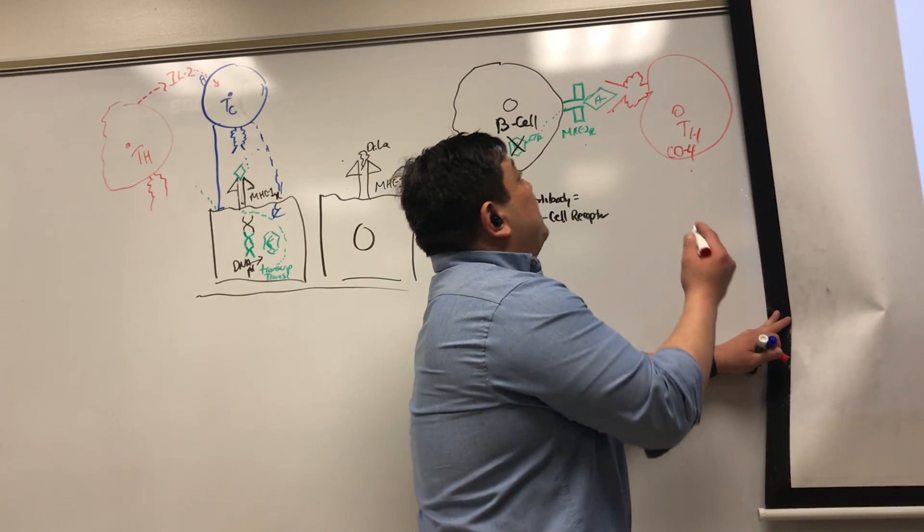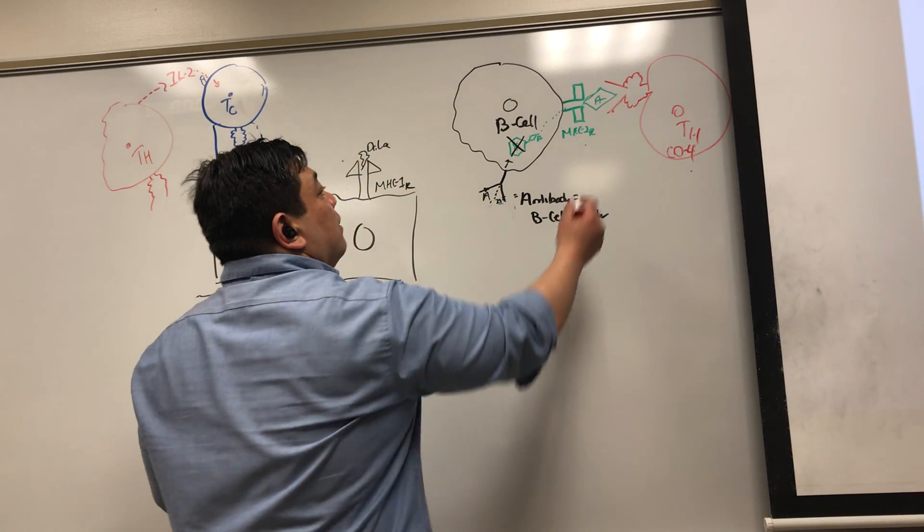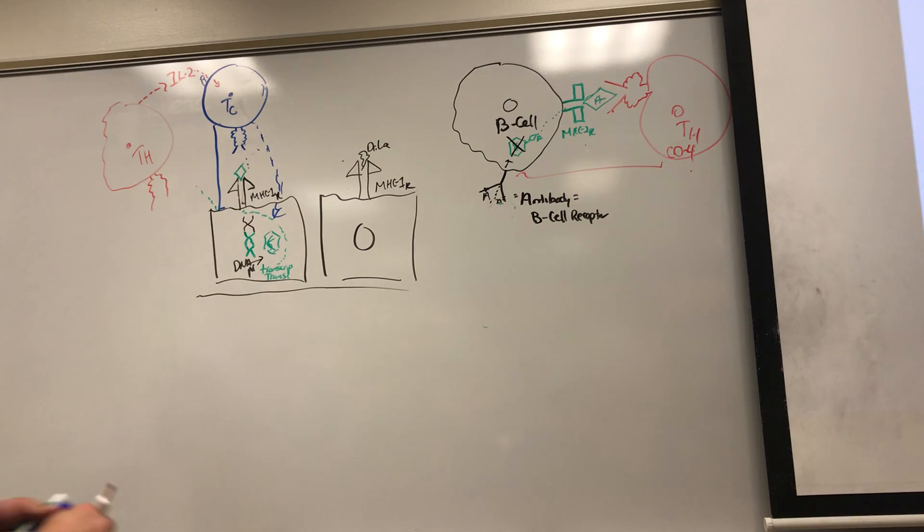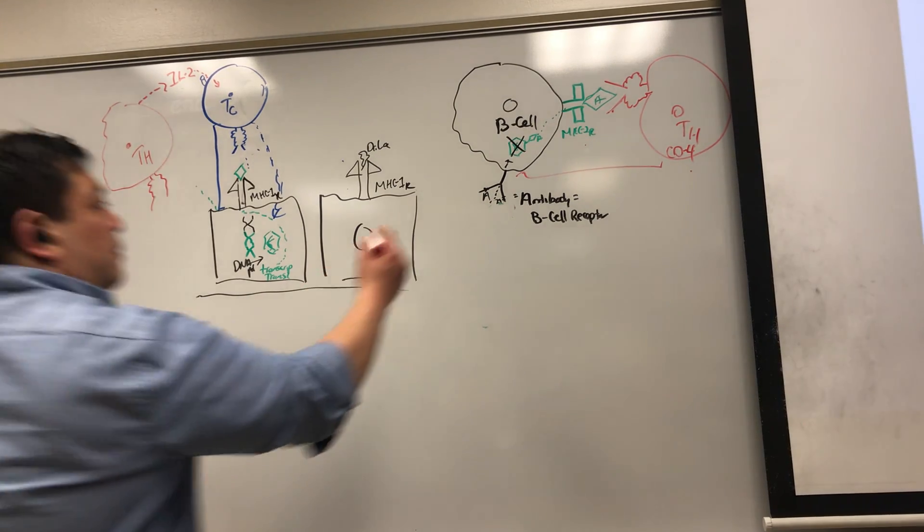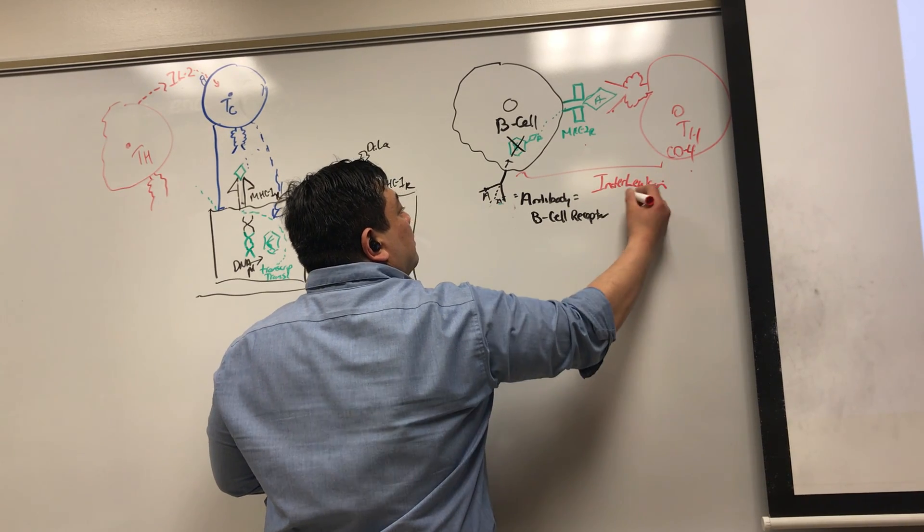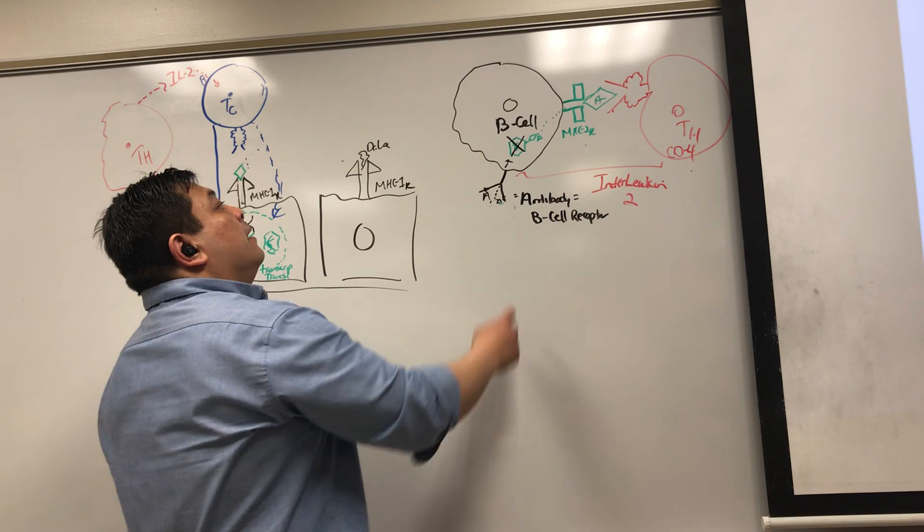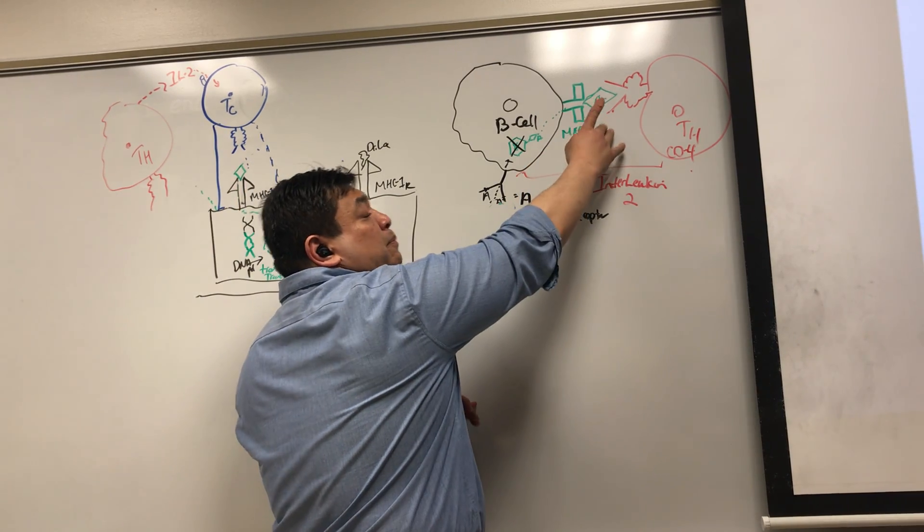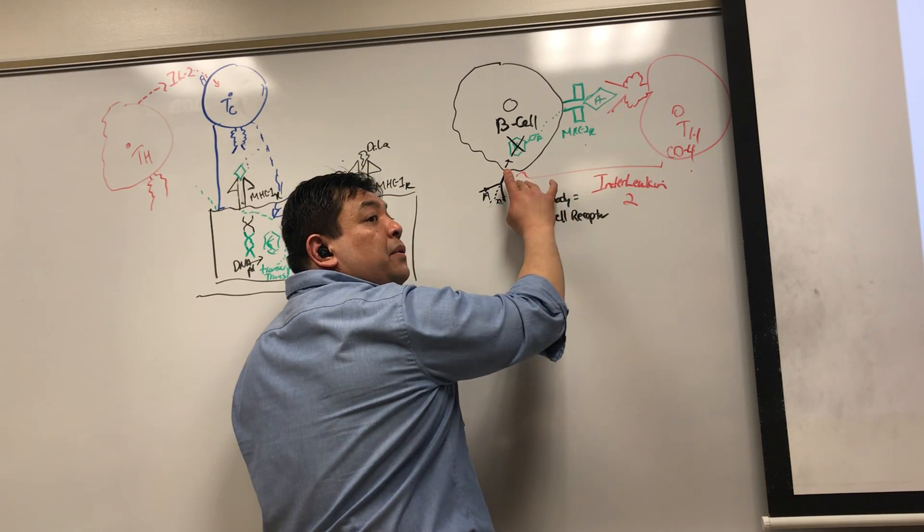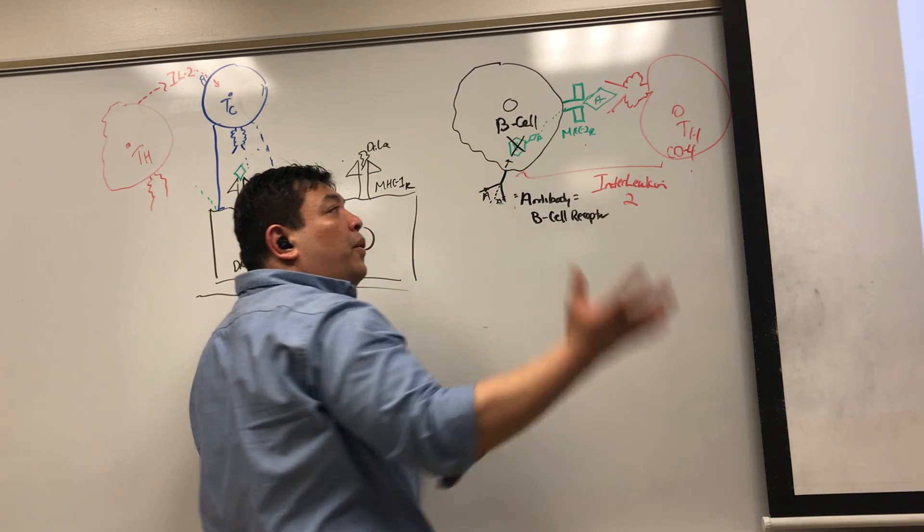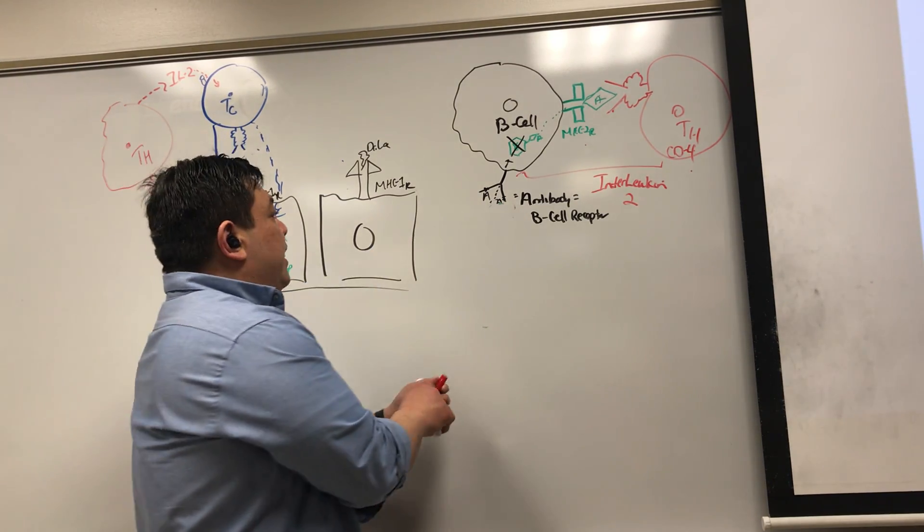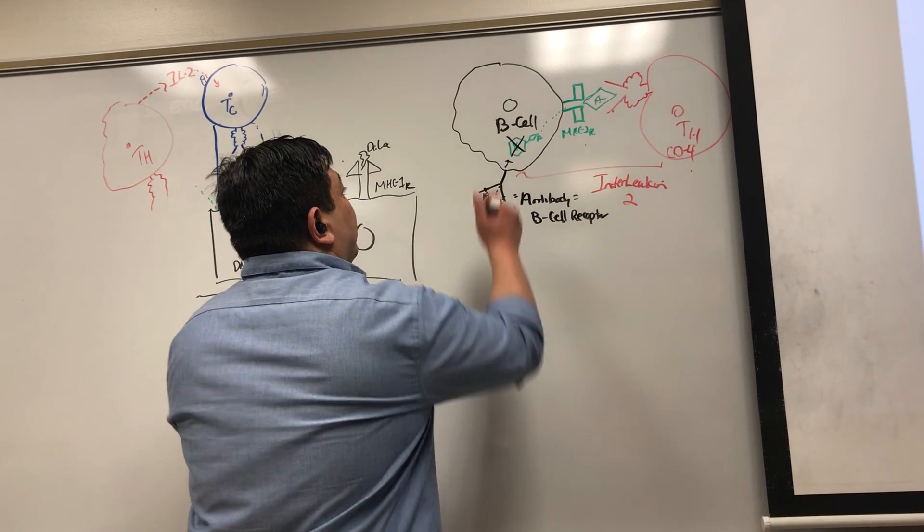So, what happens? Well, what happens is this. Because it matches, the helper T-cell then will release interleukin. Once interleukin is released, the combination of displayed epitope, T-cell recognition, interleukin two, that whole, I mean there's other ones as well, but these co-stimulation allows me then to activate this B-cell.